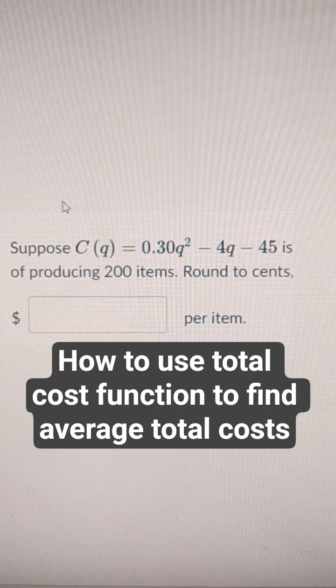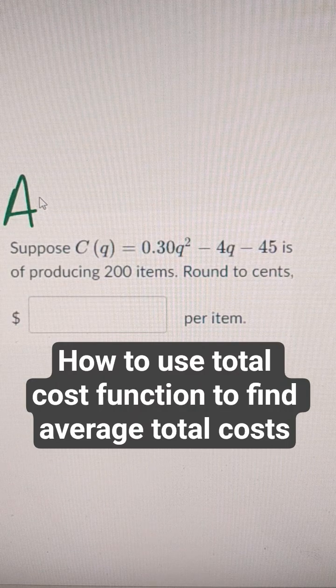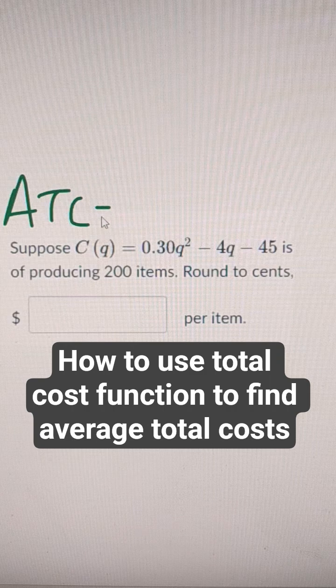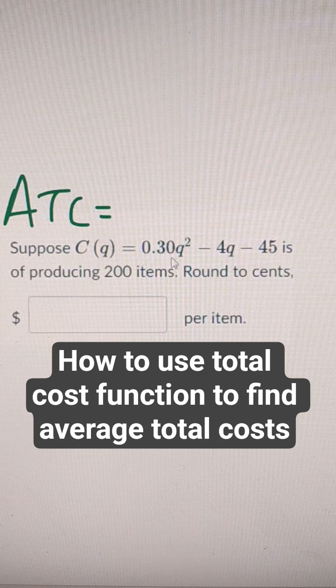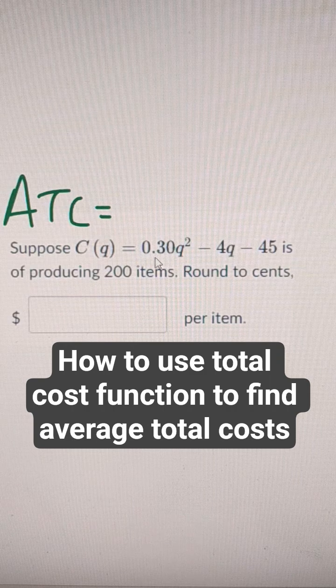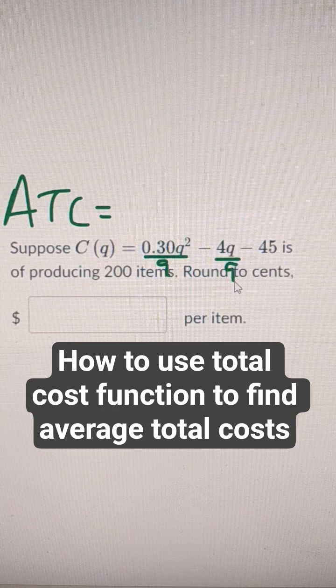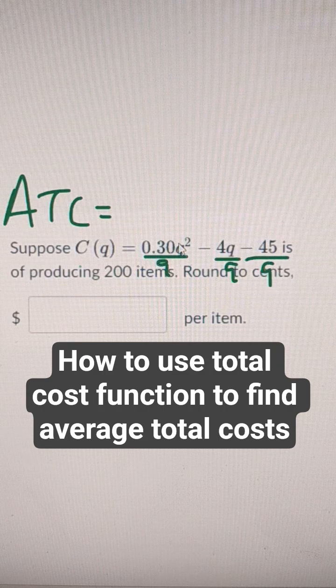Here we want to figure out what the average total cost of producing 200 units would be. So let's calculate what the average total cost would be from this function. We're just going to divide everything by Q, and then that gives us average total cost.